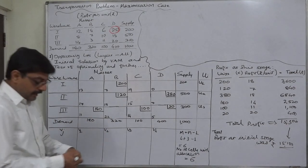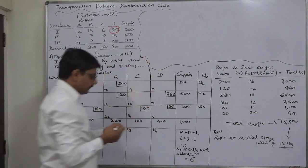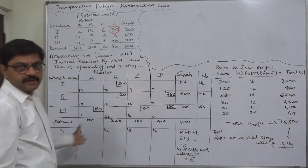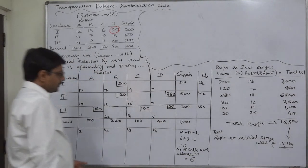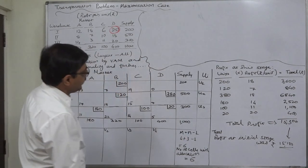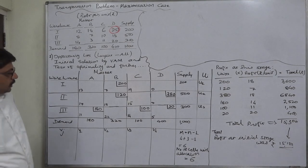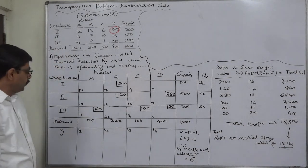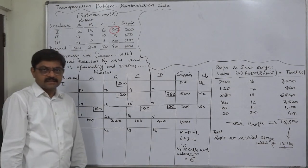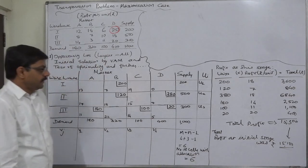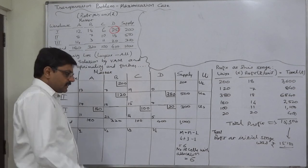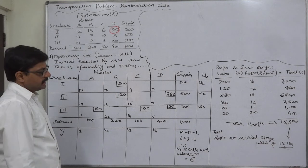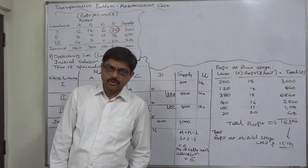Again we have to perform the test of optimality — we need to calculate dij values. To calculate dij values we need the dual of this transportation problem, and for that purpose we need to write ui and vj values. To write ui and vj values, we take any one of u or v as zero. It is advisable to take zero where the row or column has the highest proportion of occupied cells.